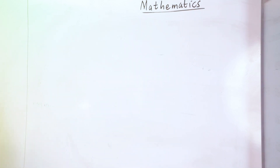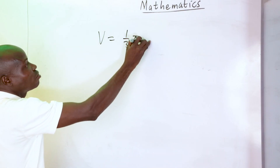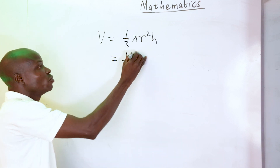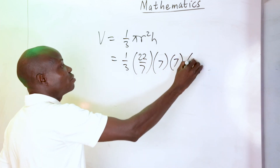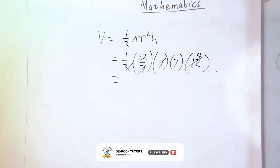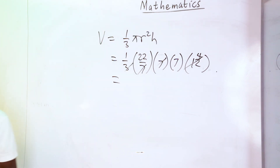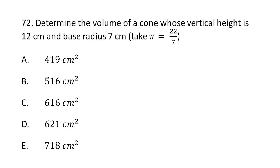Number 72: find the volume of a cone with vertical height 12 cm and base radius 7 cm. Volume equals (1/3)πr²h, giving (1/3) times (22/7) times 7 times 7 times 12. Simplifying, 7 cancels to give 22 times 28, which equals 616 cubic centimeters. That matches option C.